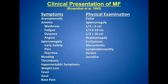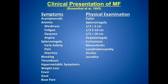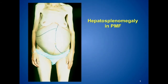Patients can present asymptomatically or with anemia leading to weakness, fatigue, shortness of breath, and cardiovascular complications. They can present with symptoms due to an enlarged spleen, with bleeding, and most importantly with thrombosis. They can also present with hypermetabolic symptoms — now called systemic symptoms — which include weight loss, fever, gout, and bone pain.